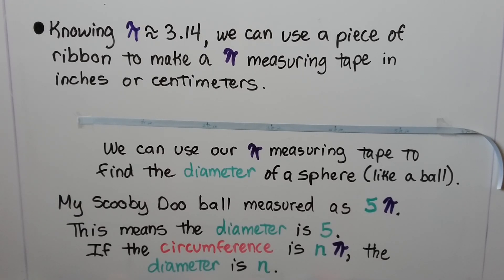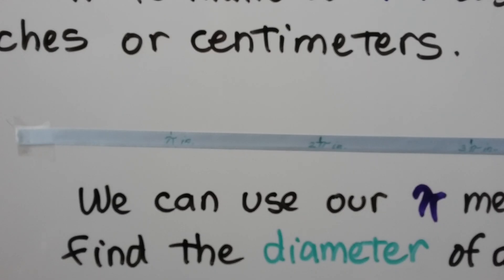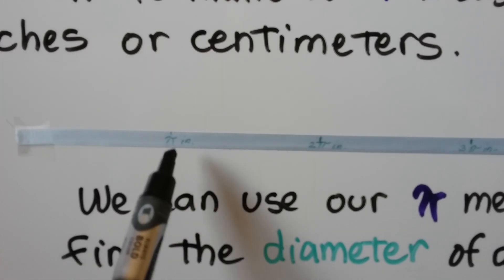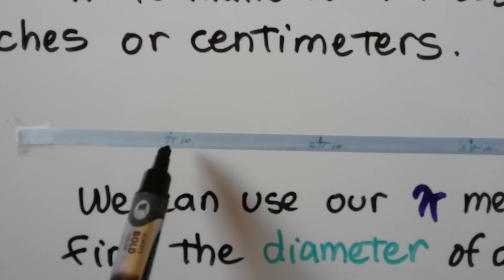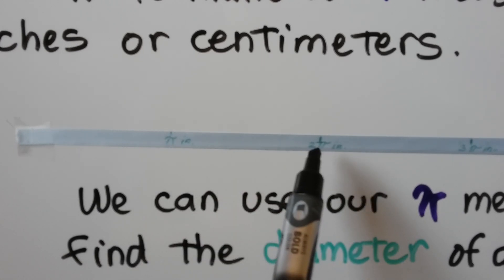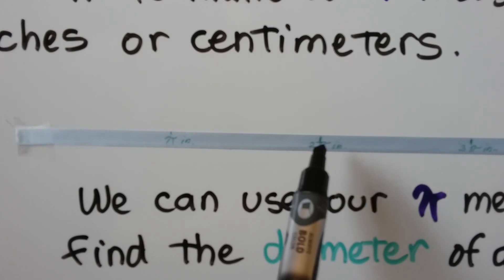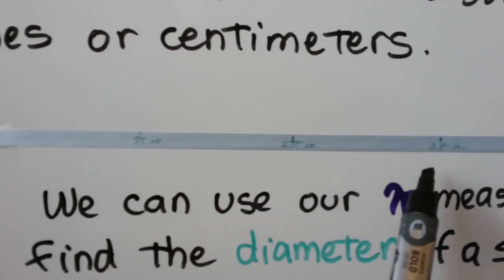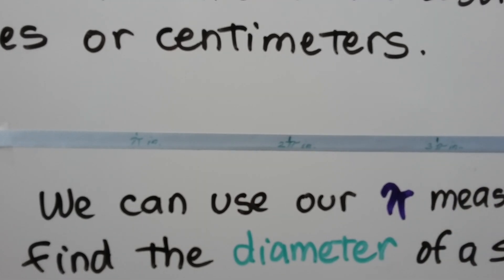Knowing pi is approximately 3.14, we can use a piece of ribbon to make a pi measuring tape in inches or centimeters — I did it in inches. We can use our pi measuring tape to find the diameter of a sphere, like a ball. I took a ruler and ribbon, measured 3.14 inches and marked it as pi — an approximation since we don't have all the digits of pi. I marked another 3.14 inches as 2 pi, then 3 pi, and kept going.